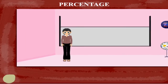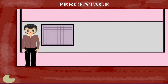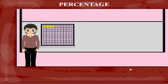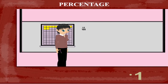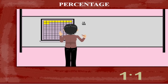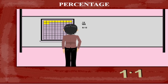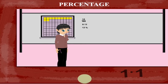Percentage. Nancy has a check square on the board with 100 squares. She colors 12 squares and writes the fraction 12 upon 100. This is the same as 0.12, and 12 out of 100 is also 12%.